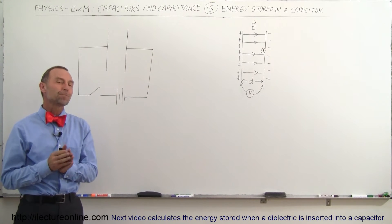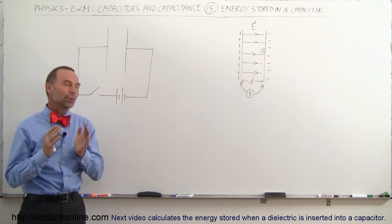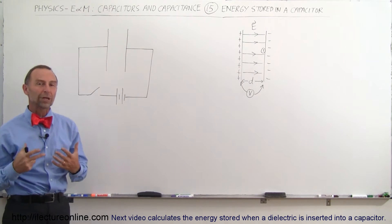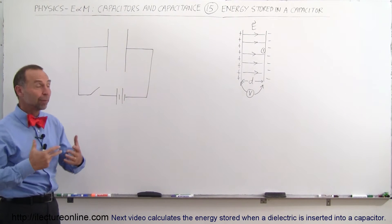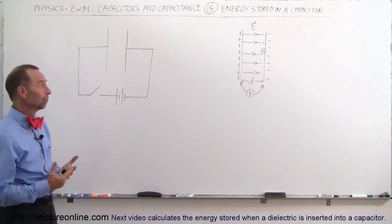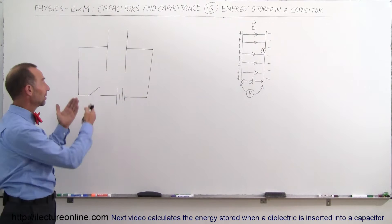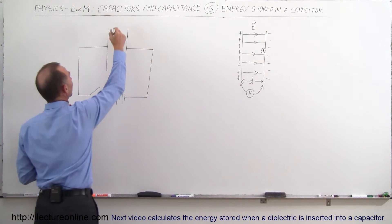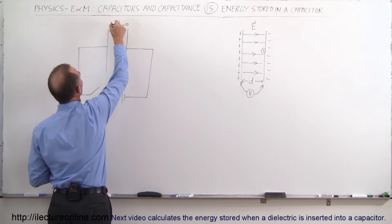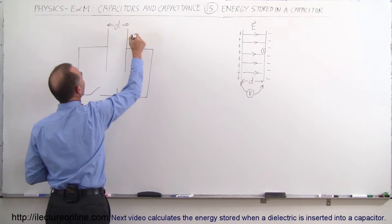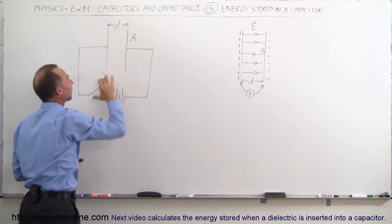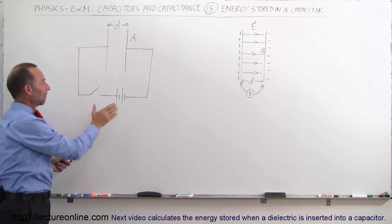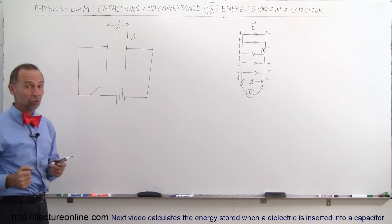Welcome to ElectronLine. Here we're going to show you how to calculate the energy stored in a capacitor by putting charge onto a capacitor. So here we have an example: we have a capacitor right there, we have the distance between the plates, we have the area of the plates, there's air in between the plates, and we have a battery attached to it with a switch.